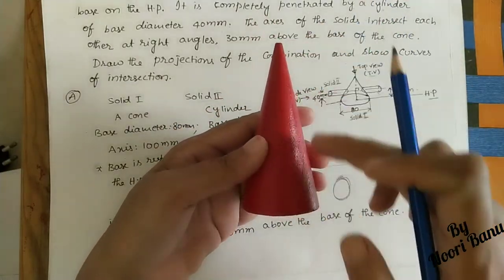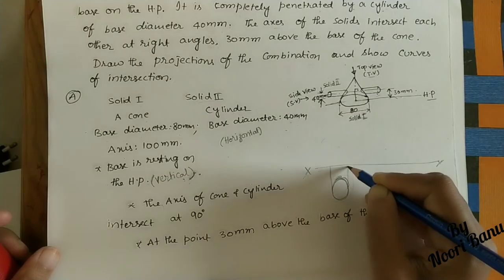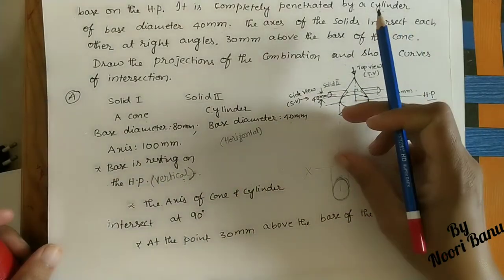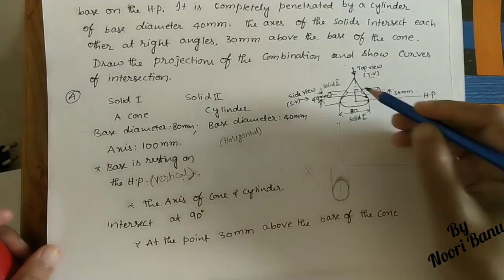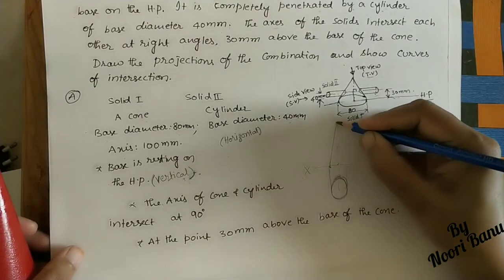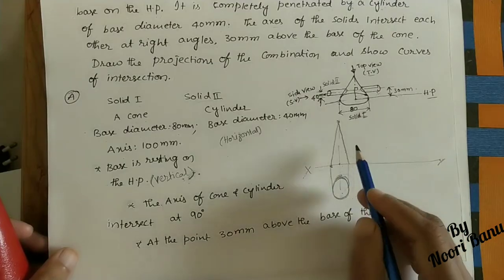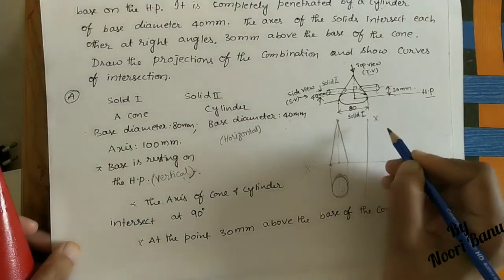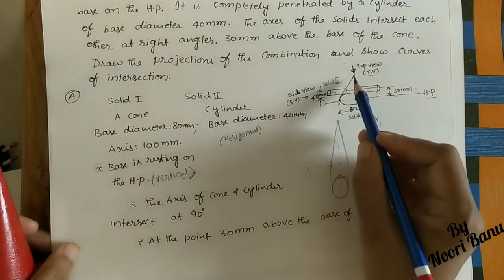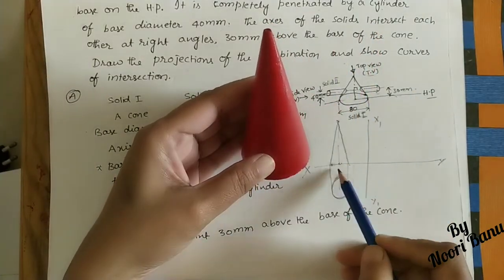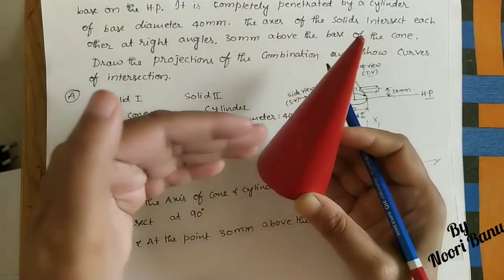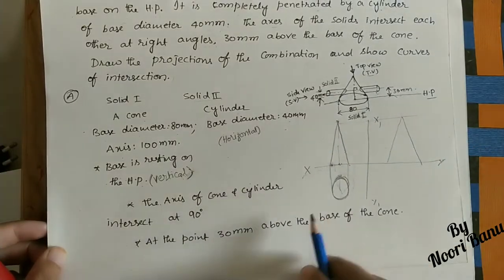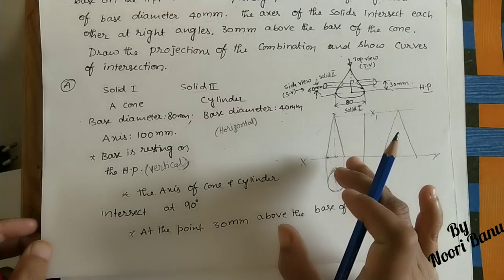The front view of the cone looks like a triangle above the XY line. We draw projector lines from the circle, then mark the axis. The cone height is 100 mm, so from the base we take 10 cm up to the apex. For the side view, we draw another reference line X1Y1, and the cone appears as a similar triangle.